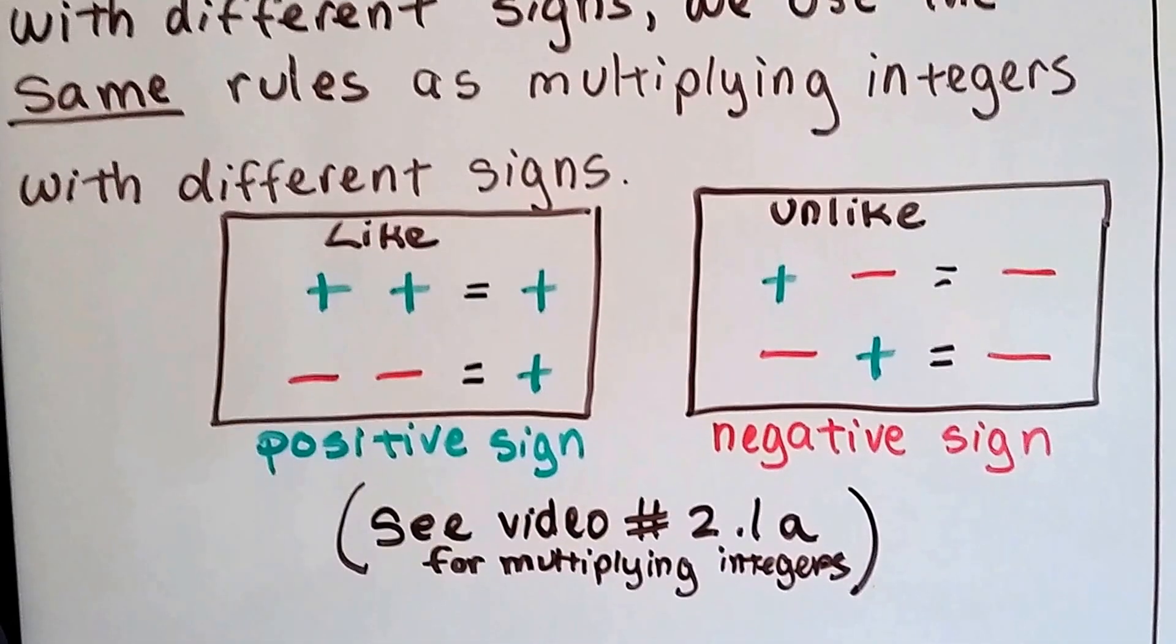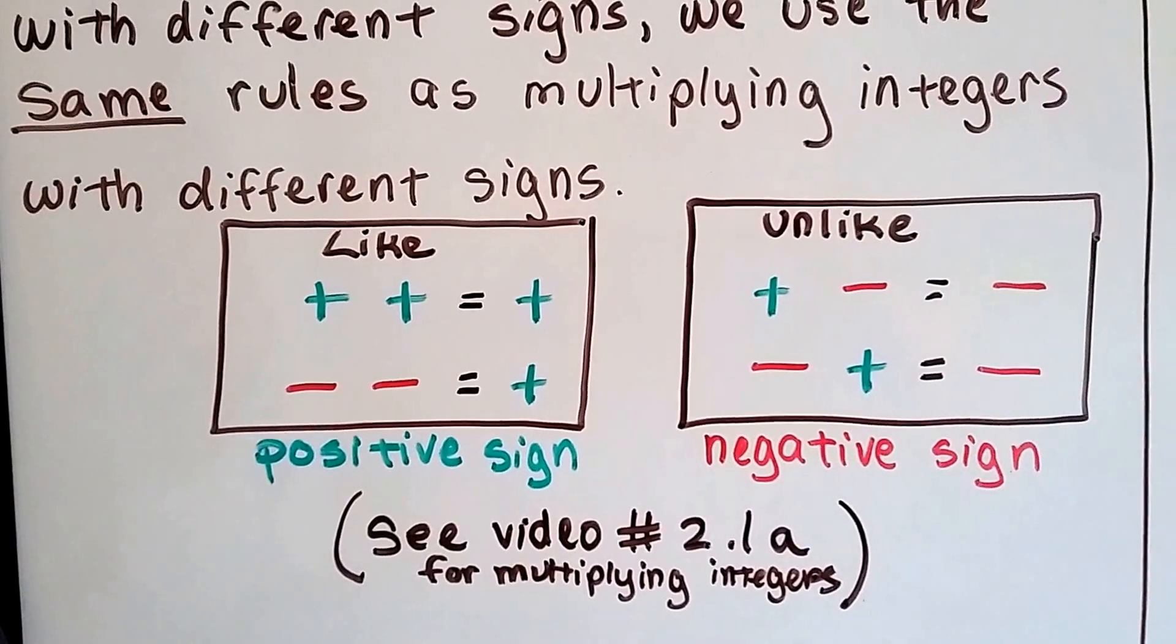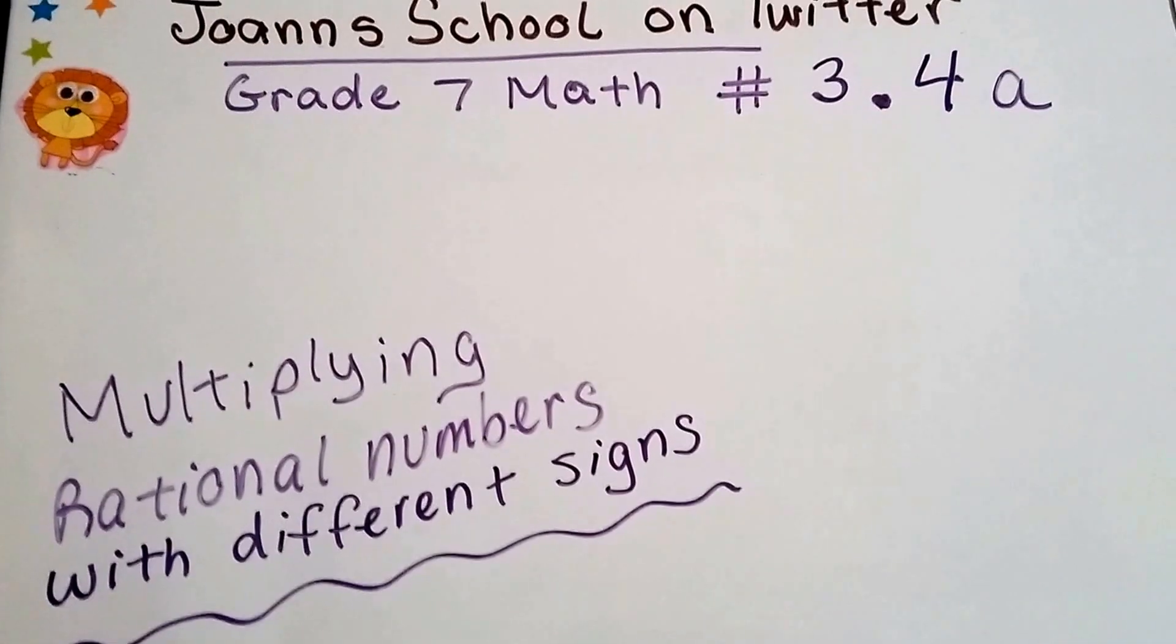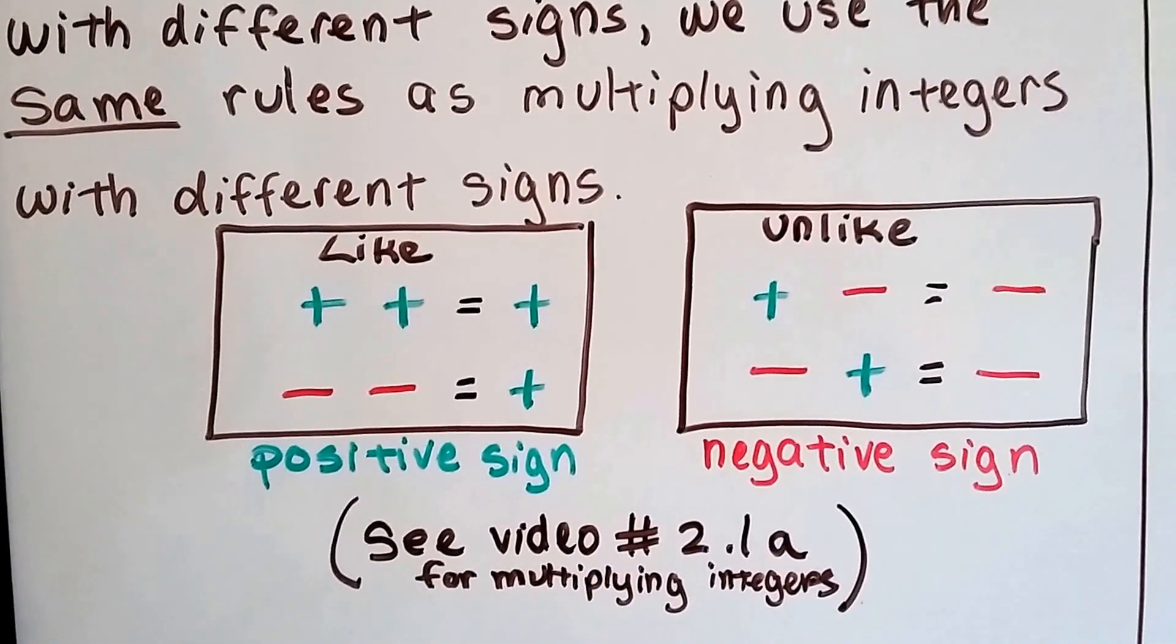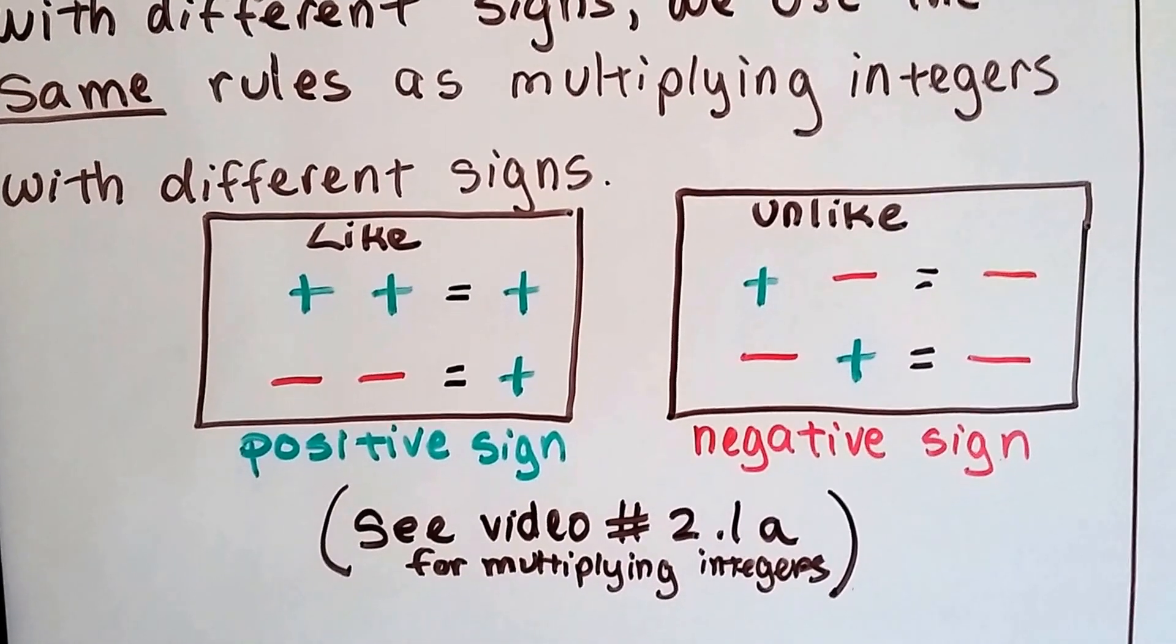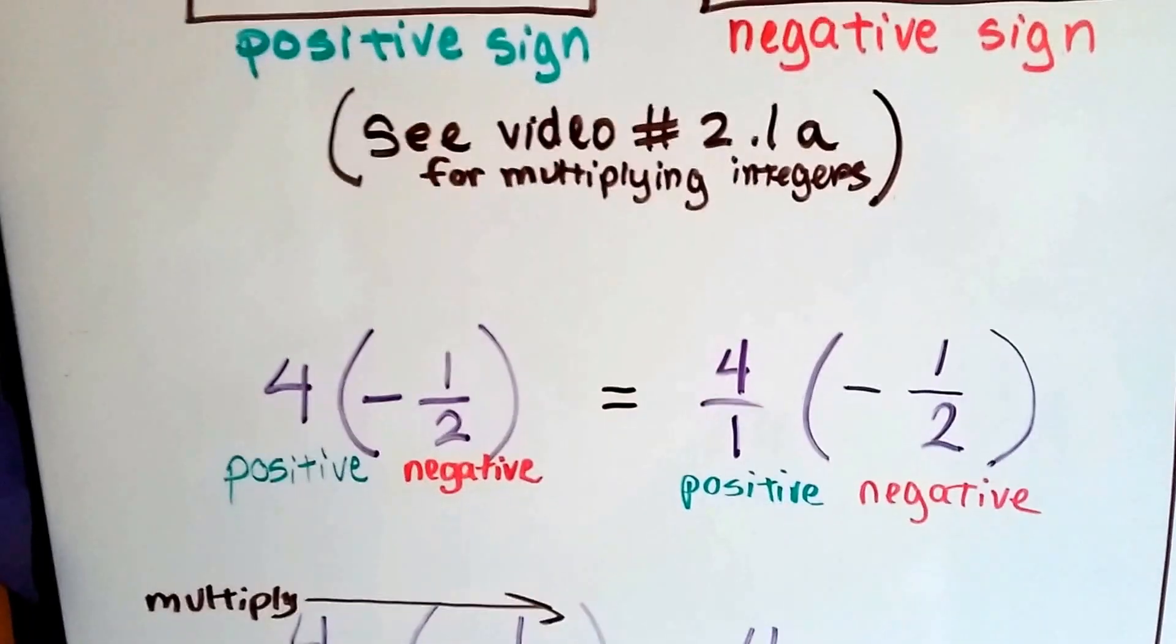And if you're still confused, I'd advise you to go back to video number 2.1a. We're on 3.4a. That's just a couple of chapters ago to cover multiplying integers, just to give you a refresher. Then you can come back and watch this one, or you could try following along and see if you get it.